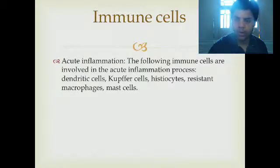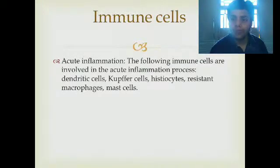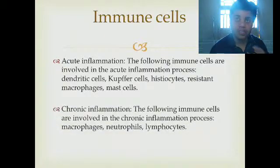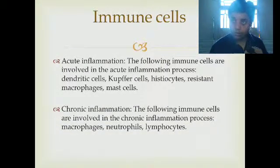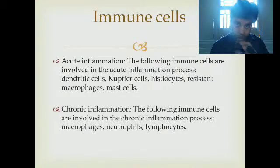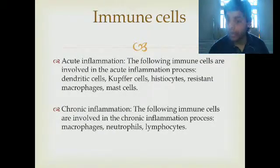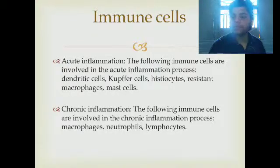In the case of chronic inflammation, the immune cells involved are macrophages, neutrophils, and lymphocytes. Because chronic inflammation is specific, it usually involves lymphocytes — specifically B-lymphocytes and T-lymphocytes.